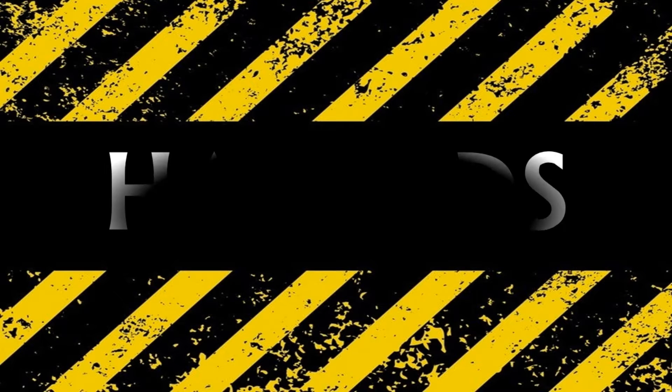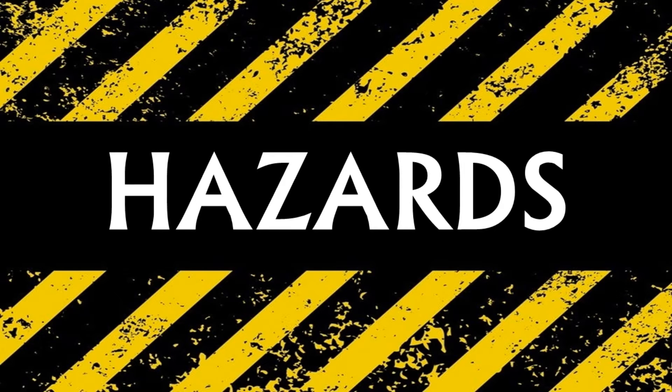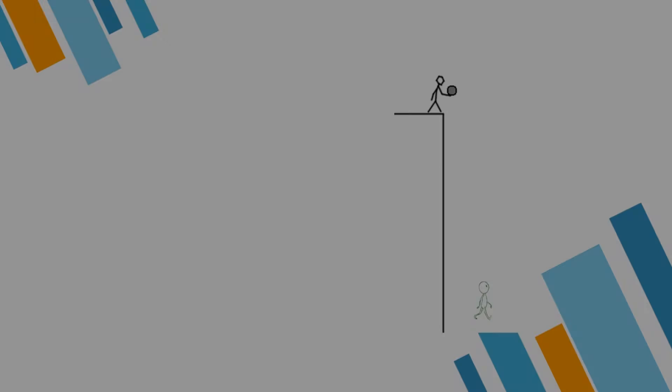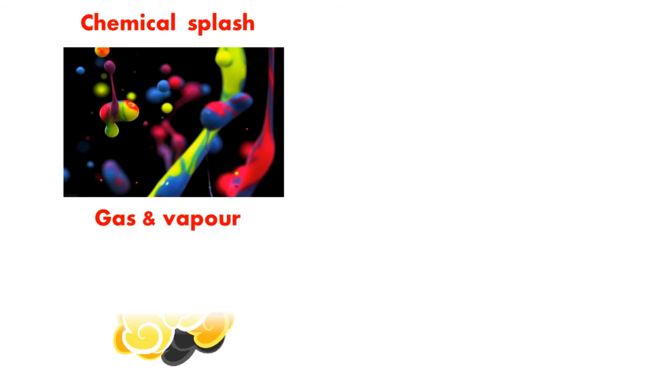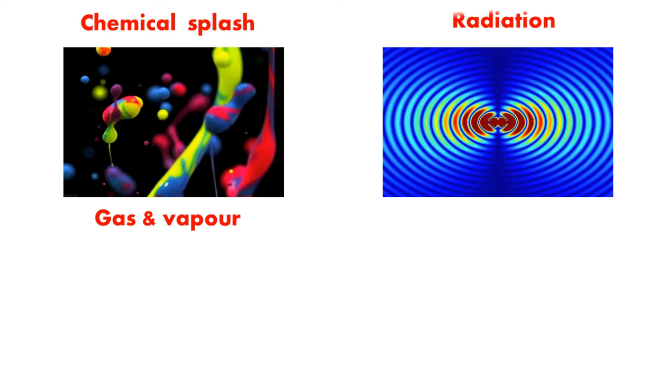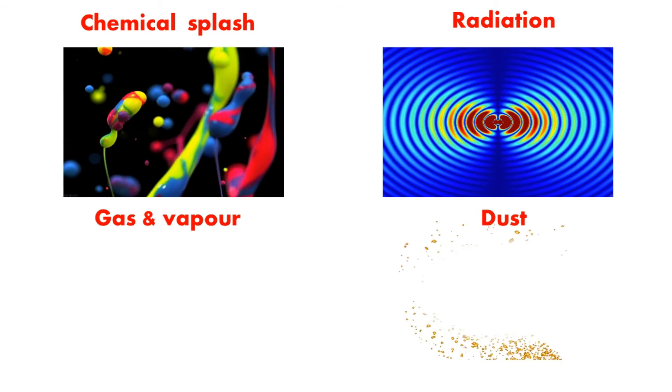Before going to discuss about types of PPE, let us see some of the hazards associated with workplace activities. Impact from falling or flying objects, risk of head bumping, hair entanglement, chemical splash, gas and vapors, radiation, and dust.